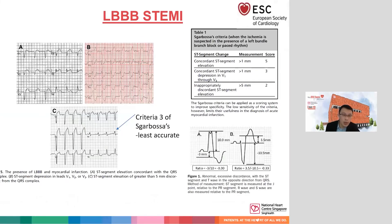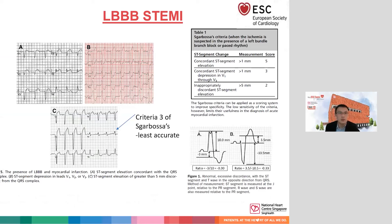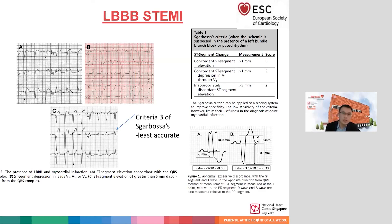The Sgarbossa criteria help you gain more accuracy with LBBB in a patient with ACS. First: if ST segments in V5-V6 go up instead of down — concordant ST elevation — this is very strongly suggestive of STEMI. Second: if you see ST depression instead of ST elevation in V2-V3, strongly suspect ongoing myocardial ischemia. Third, the least specific criterion: discordantly tall ST segment in V2-V3 may suggest STEMI, and some refine this to say ST elevation of 30% or more relative to the deep S wave is more specific.